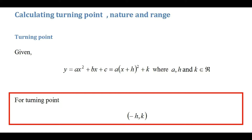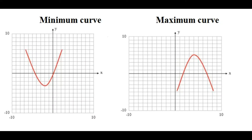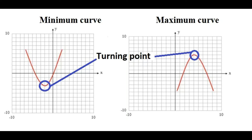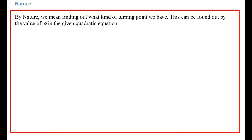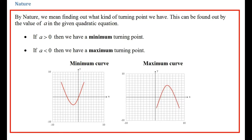Now, to find the nature of the turning point — by nature, we mean what kind of turning point we have. For a quadratic, we have either a maximum point or a minimum point. This can be found by the value of a in the quadratic equation. If a is greater than zero, we have a minimum turning point. If a is less than zero, we have a maximum turning point.